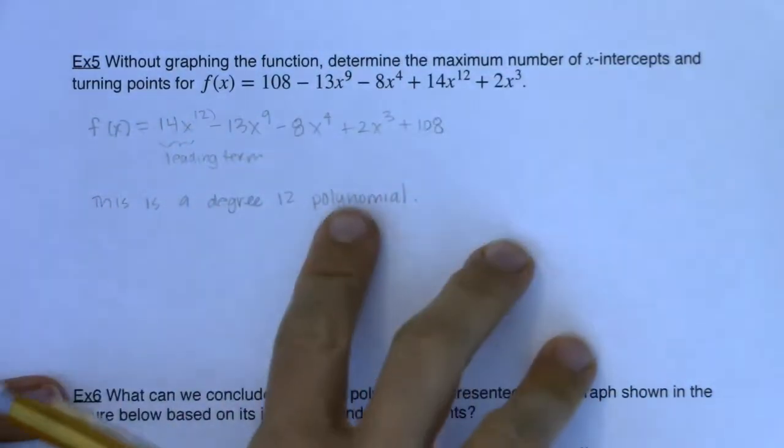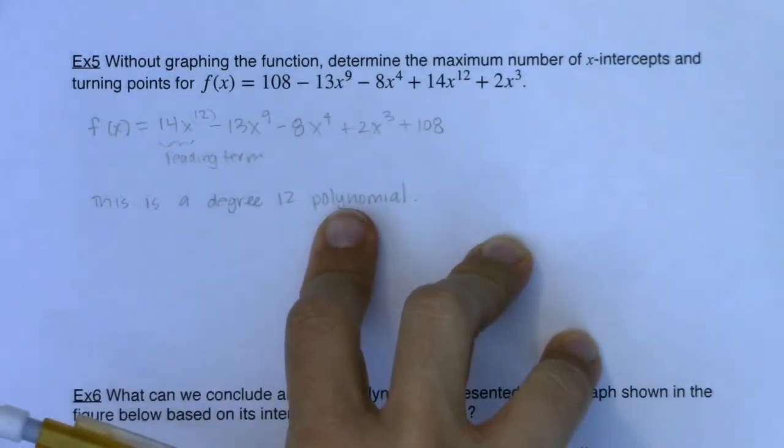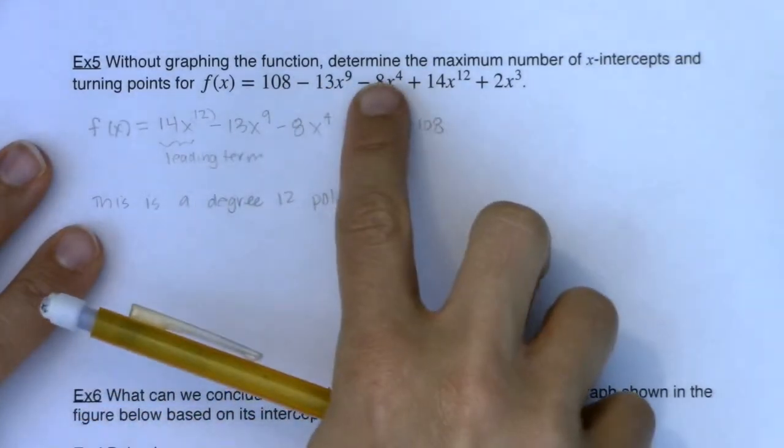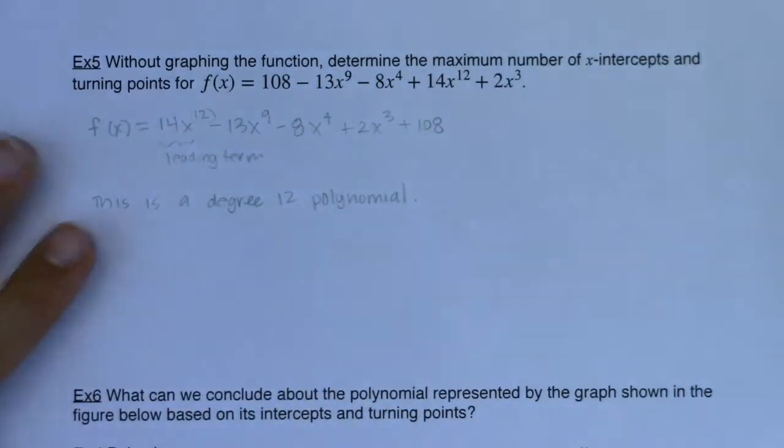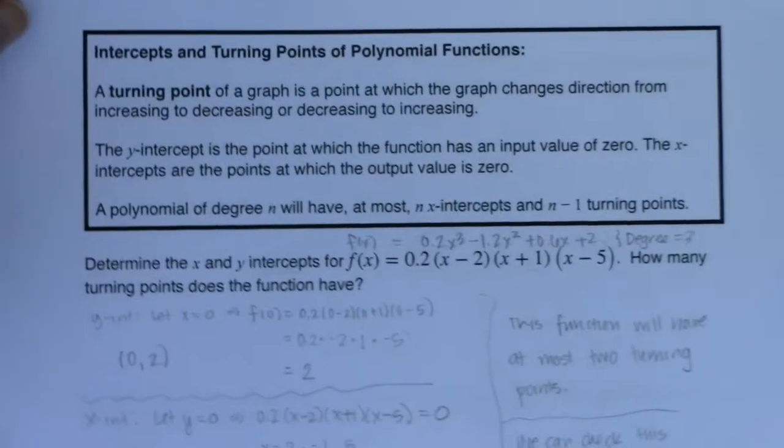And I don't even want to try and graph this on my graphing calculator. That would be a lot to take in. But the question here, it says, determine the maximum number of x-intercepts and turning points. And that's going to go back to that box on the previous page, and specifically the last sentence in it.